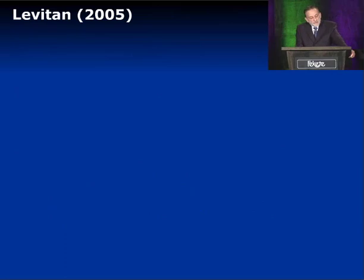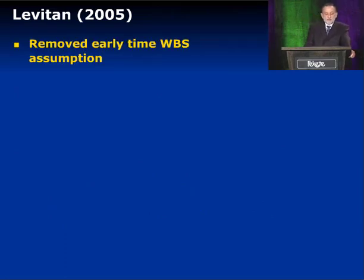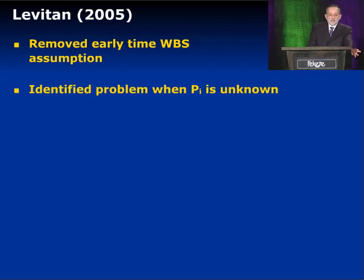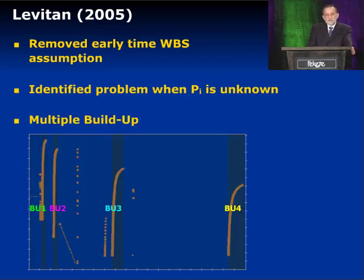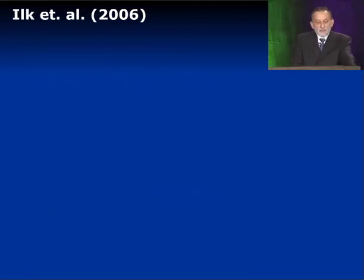What did Leviton do? Leviton extended von Schroeter's method. He removed the assumption of early wellbore storage. He identified the problem we've already seen in the classical methods: when you don't know the initial pressure, there are significant problems with any deconvolution process. But he showed us a way of getting around that problem — if you have multiple buildups, especially if a buildup occurs early in the life of a well, you can get around the absence of the initial pressure.